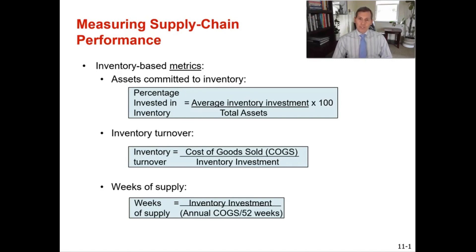For inventory turns, or your inventory turnover metric, you're going to take your cost of goods sold divided by your inventory investment. And then for weeks of supply, you're going to take your inventory investment and divide that by the annual cost of goods sold divided by 52 weeks.